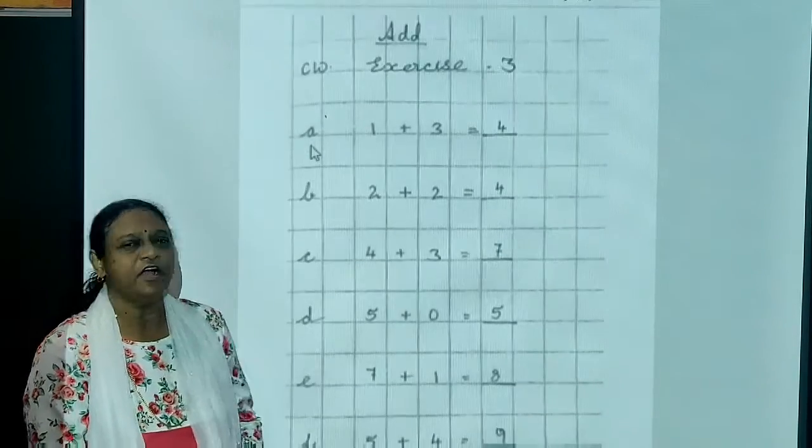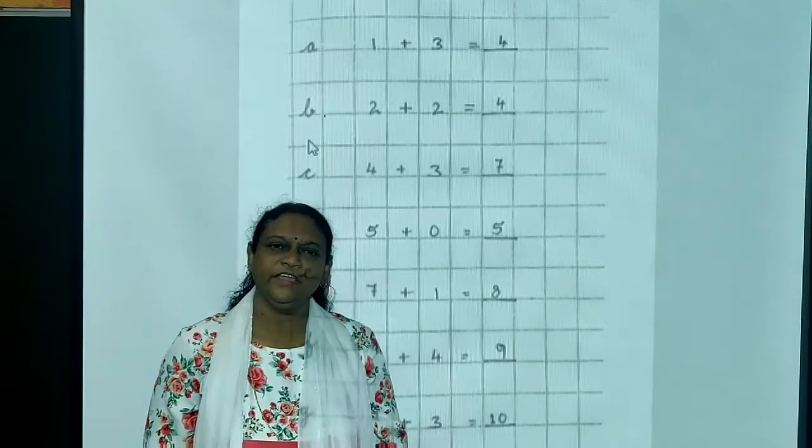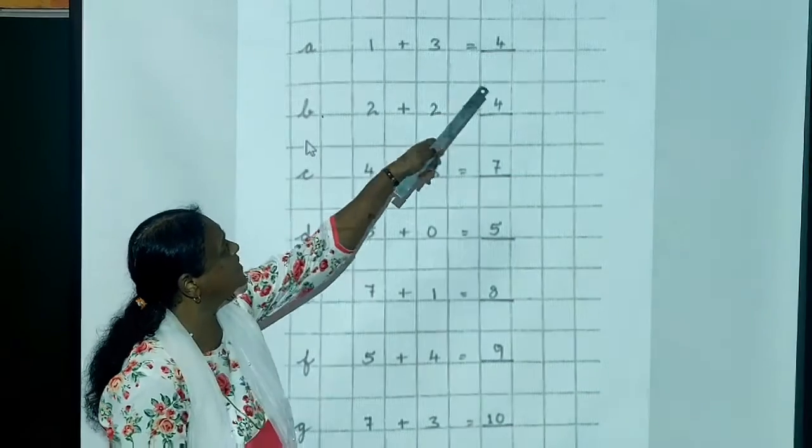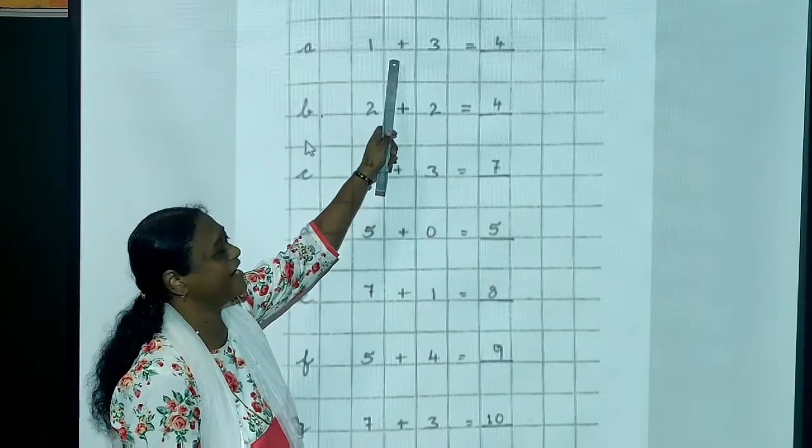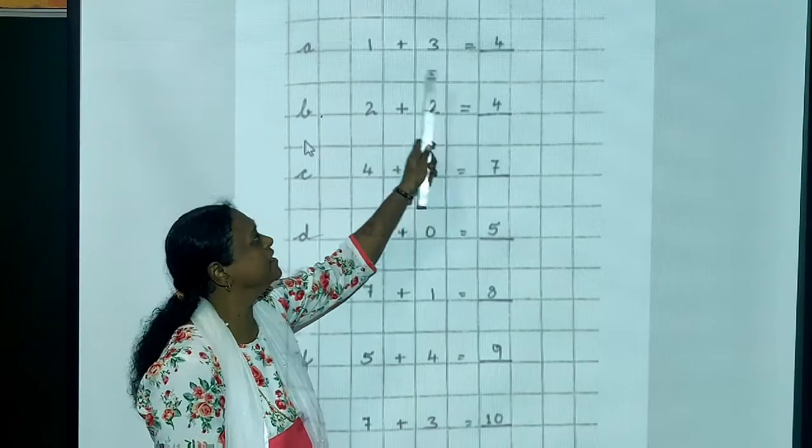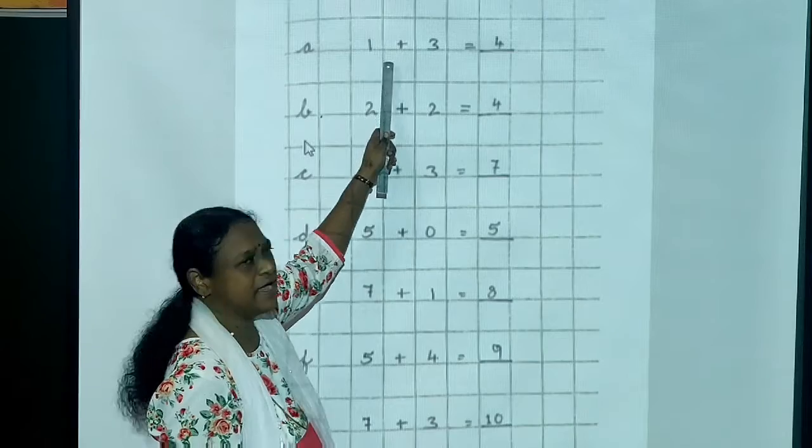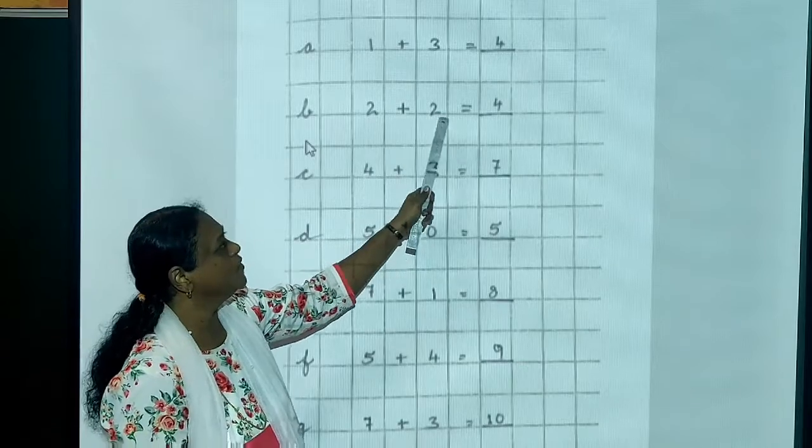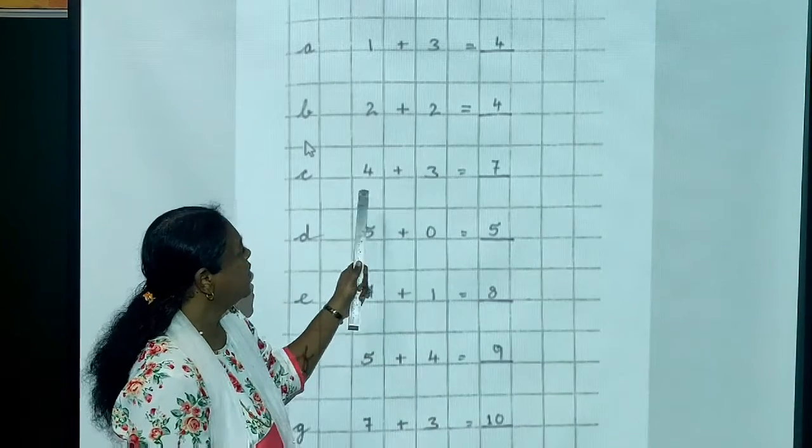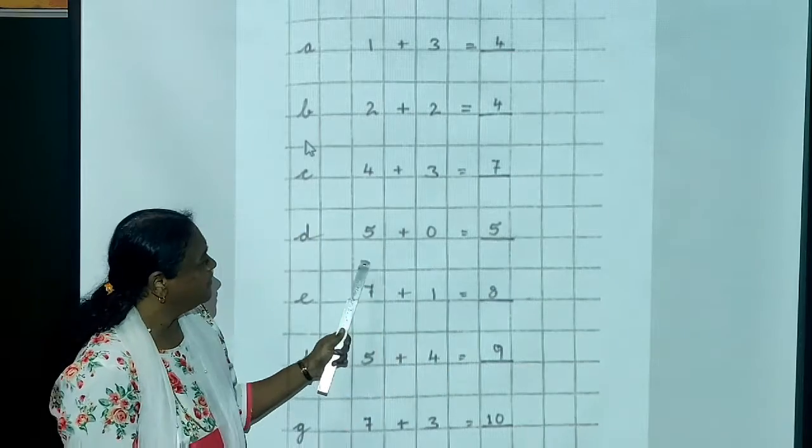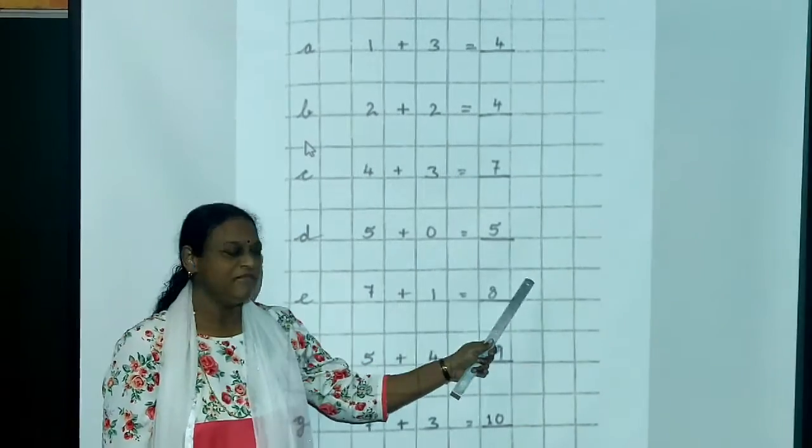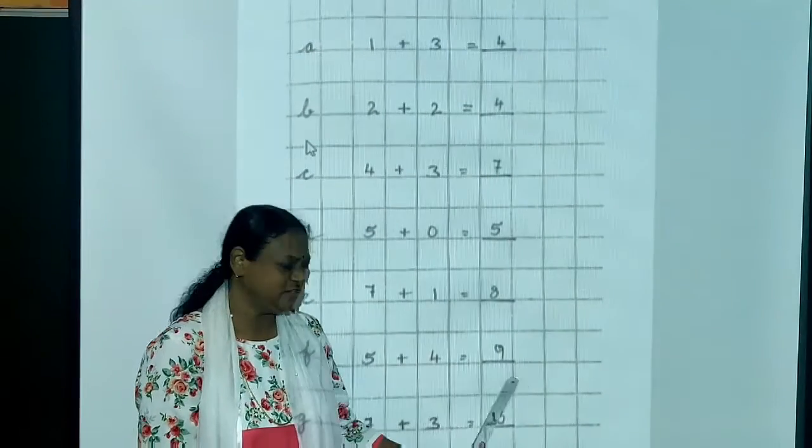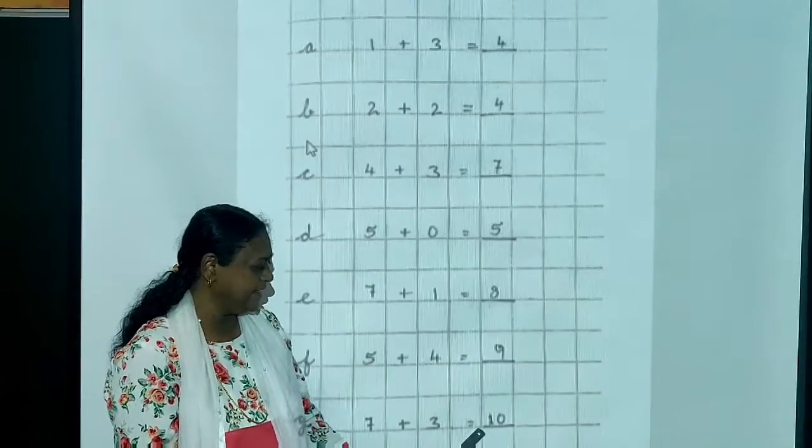Now, I have already told you. In addition, we can do the sums horizontally and vertically. So now, this way. Exercise number 3. 3 plus 1. You have to write plus here. Equal to. These both are very important. So you have to write 1 in one box. Then plus 3 equal to. Then it will be 4. So 2 plus 2 is equal to 4. 4 plus 3 is equal to 7. 5 plus 0 is equal to 5. 7 plus 1 is equal to 8. 5 plus 4 is equal to 9. 7 plus 3 is equal to 10. You have to count and write.